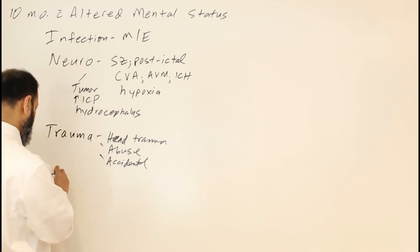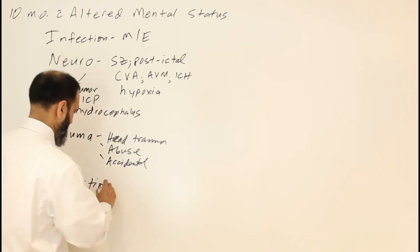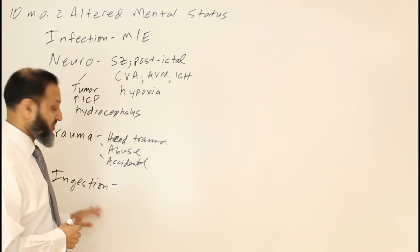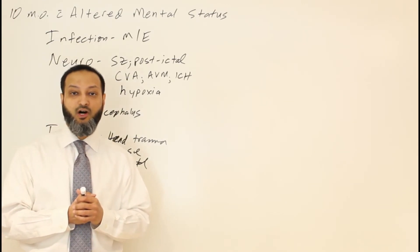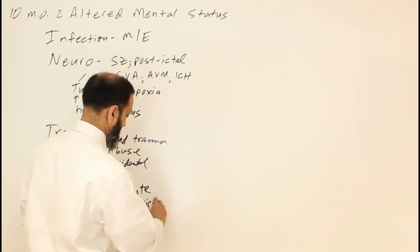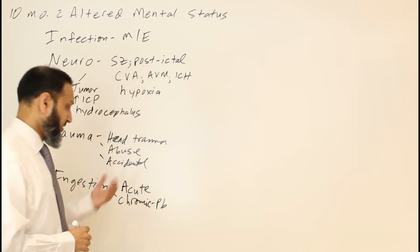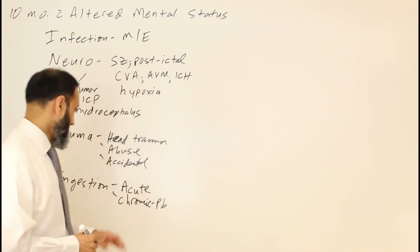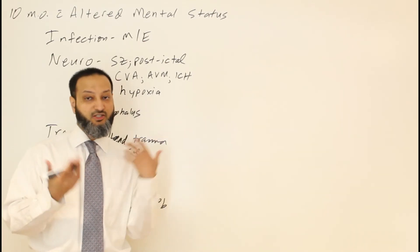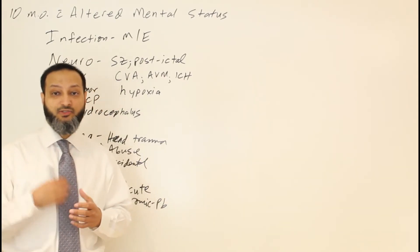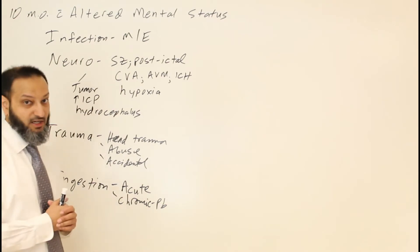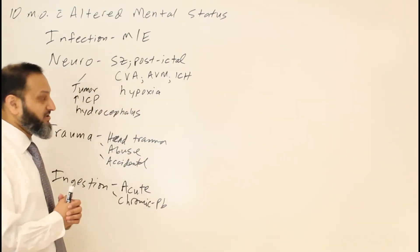Another category high on the list given his age is ingestion. He's a 10-month-old crawling and moving around with a four-year-old sibling who might have gotten into something and given it to him. Some sort of toxic ingestion is a major consideration. Acutely, you can have acute or chronic ingestion — chronic ingestion brings up lead toxicity, which can cause encephalopathy and altered mental status. Acute ingestion can also cause mental status changes: alcohol, benzodiazepines, barbiturates, depending on what's available in the house.